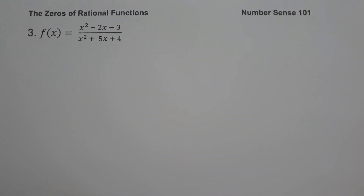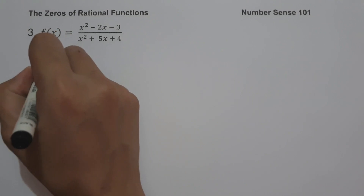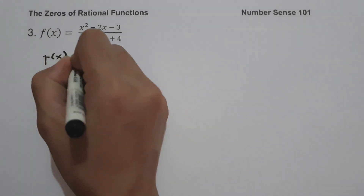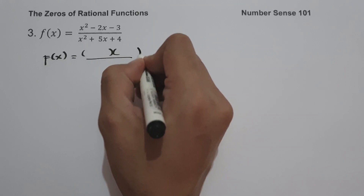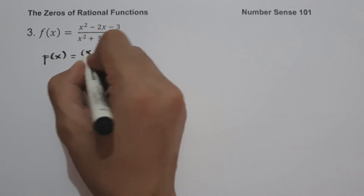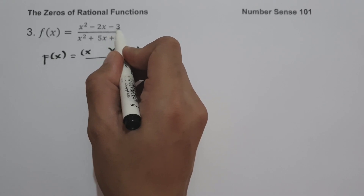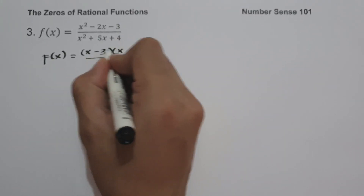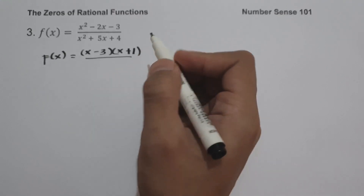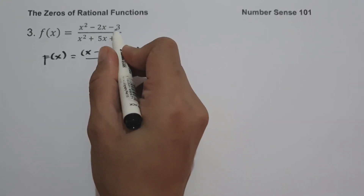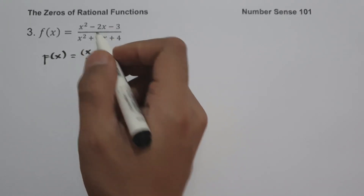For example number 3, we have f of x equals x squared minus 2x minus 3 all over x squared plus 5x plus 4. Let us factor the numerator: the factors of x squared are x and x. We need two numbers that multiply to negative 3 and add to negative 2 — those are negative 3 and positive 1.